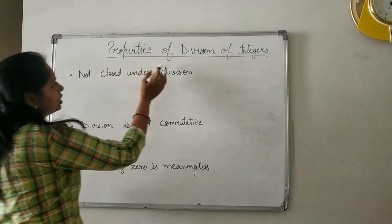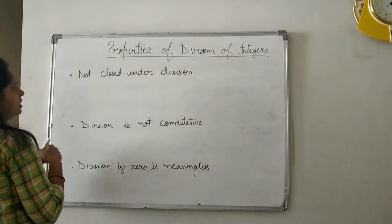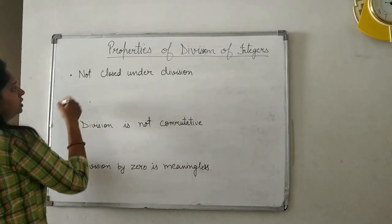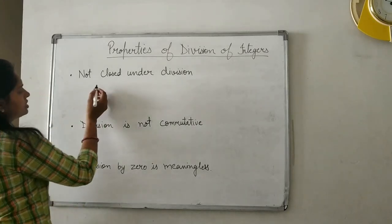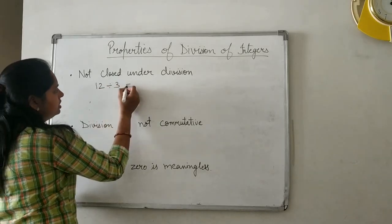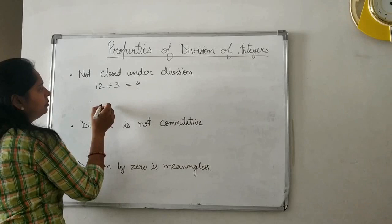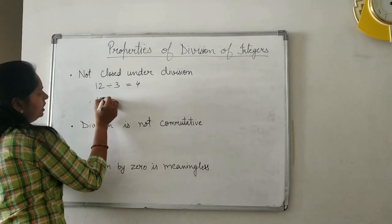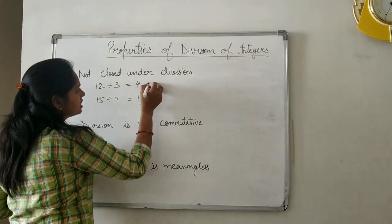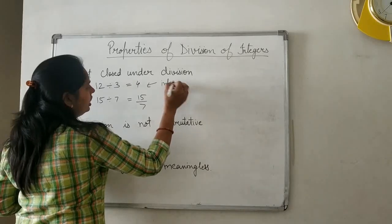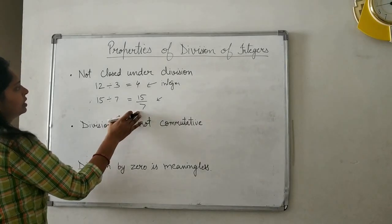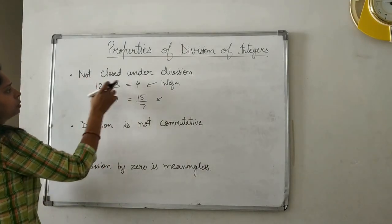Now, properties of division of integers. The first one is the closure property, which you are already aware of. But integers are not closed under division. Why? If 12 is divided by 3, the answer is 4, which is an integer. But if you divide 15 by 7, you get 15/7, which is a fraction — not an integer. So integers are not closed under division.